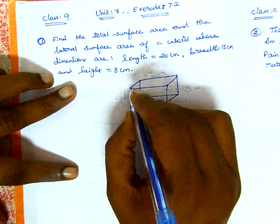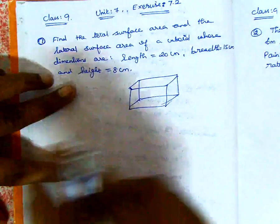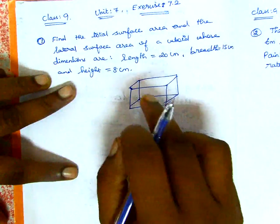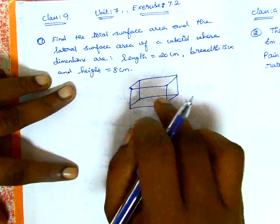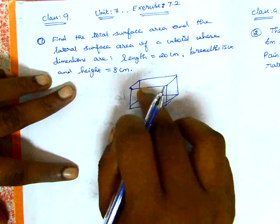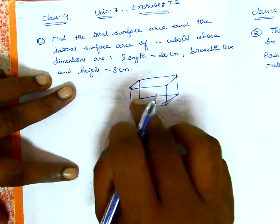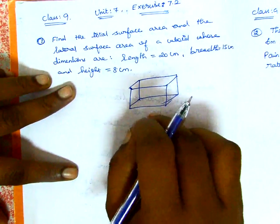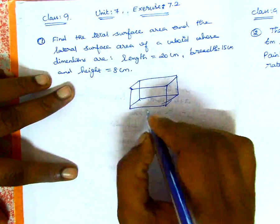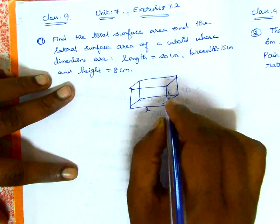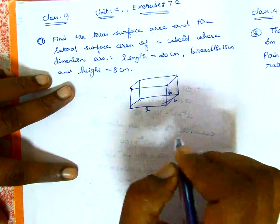All the sides look like a rectangle. A rectangle has 6 sides in the box, and every side is a rectangle. The dimensions are length, breadth, and height.